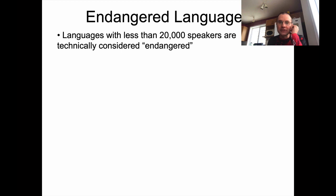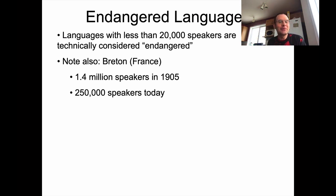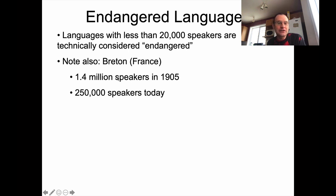Languages with fewer than 20,000 speakers can technically be considered endangered, though it also depends on the trend — whether new speakers are coming in or old speakers are leaving. Breton, a Celtic language spoken in northwest France, had one and a half million speakers a hundred years ago; now there are about a quarter million. Languages can become endangered because of government policies — if a government decides not to teach in Breton, for instance, that language becomes endangered. The Quebec language policy goes the other direction, to help sustain Quebecois French and its culture.